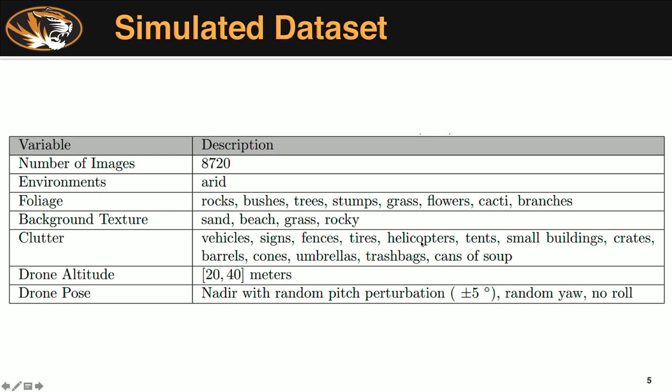Here are some parameters for the simulated dataset — check out Jeffrey Curley's talk for a more detailed explanation. We had around 9,000 images in our model, and all environments were arid. This included a variety of background objects like foliage, rocks, and stumps, with sandy or rocky background textures. We also had confuser objects similar to what you might see in the real data — vehicles, buildings, fences, cones — things that could look like targets but are not. The drone altitude was between 20 and 40 meters with a random pitch perturbation to simulate actual flight.